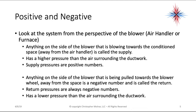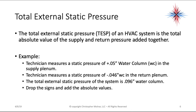Remember these positive and negative numbers because they will change your readings. The total external static pressure of an HVAC system is the total absolute value of the supply and return pressures added together — meaning you drop the sign and add them together. So a technician measures positive 0.05 inch water column in the supply plenum and negative 0.046 inches in the return plenum. The total external static pressure of the system is 0.096 inches of water column.